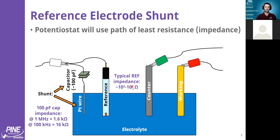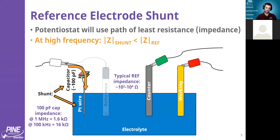If I have my reference electrode with an impedance of about 5 kiloohms, what this means is that at any moment, the potentiostat is going to use the path of least resistance or impedance in the reference line. So at 1 megahertz, with 5 kiloohms here and 1.6 kiloohms here, the potentiostat is going to sense through this capacitor because it has a lower impedance.